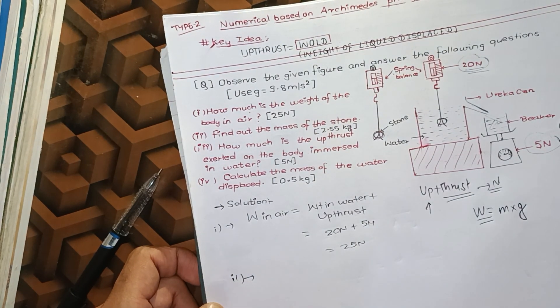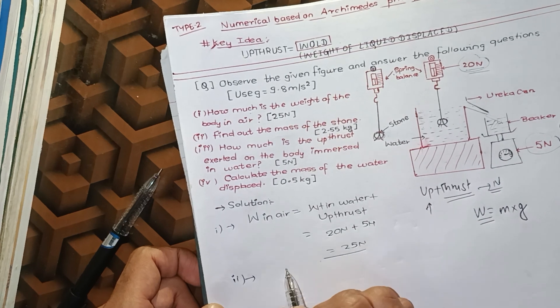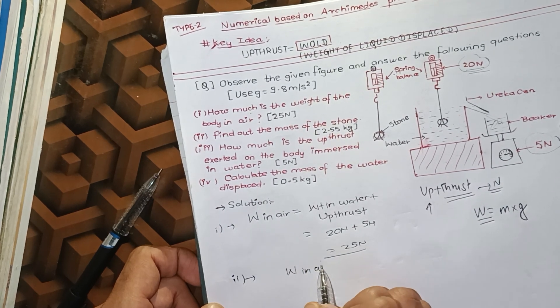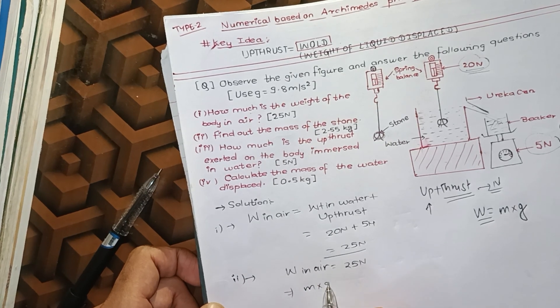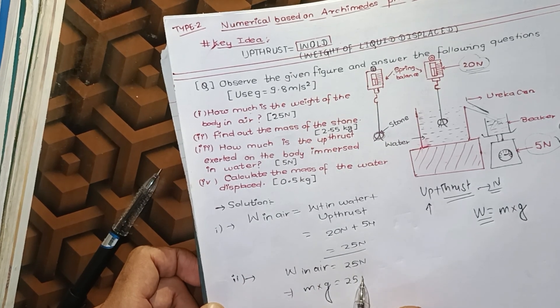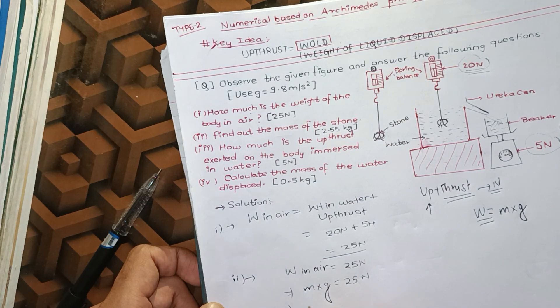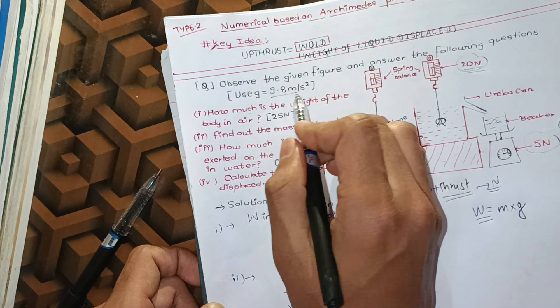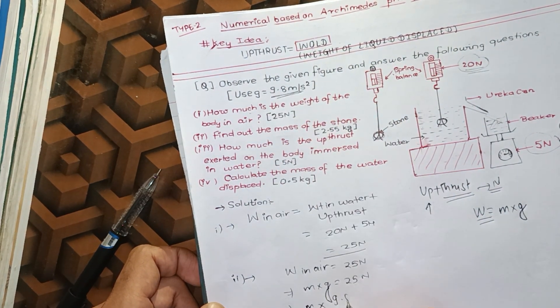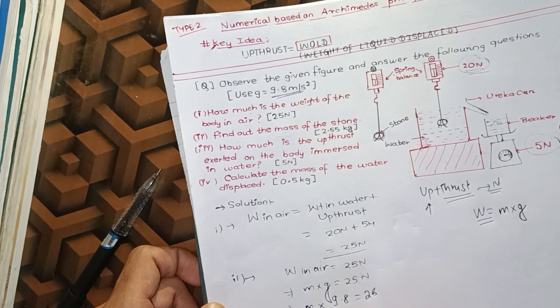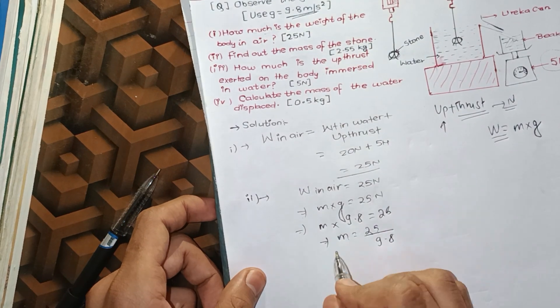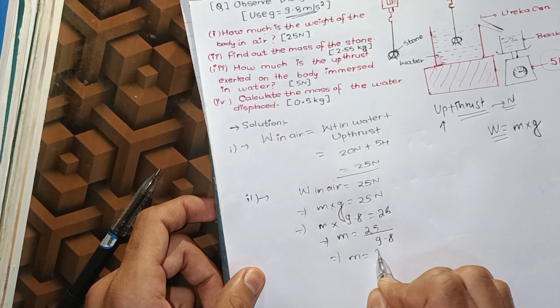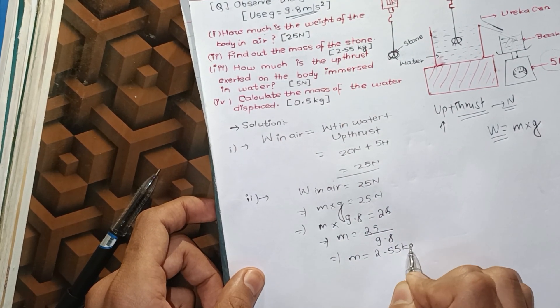To find the mass of the stone, we use weight in air which is 25N. So mass times acceleration due to gravity: mass times 9.8 equals 25N. Therefore, mass equals 25 divided by 9.8, which is 2.55 kg.